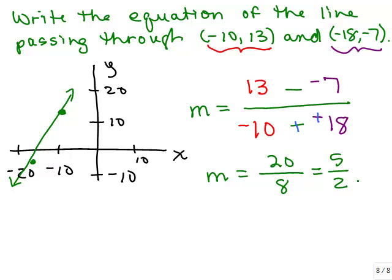So I was able to find that the slope of this line is 5 halves, and looking at my picture, that seems reasonable because it looks kind of steep, it's slanting up to the right, so we've got a positive slope.